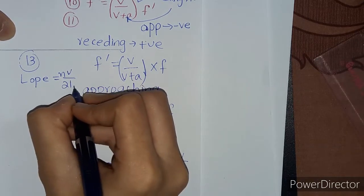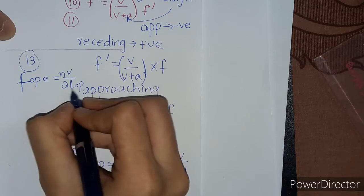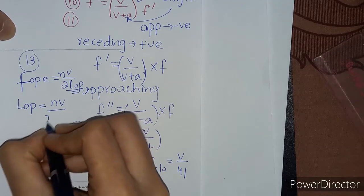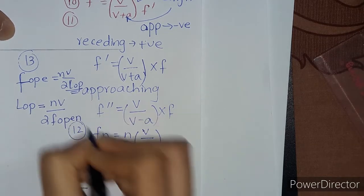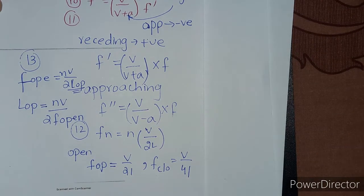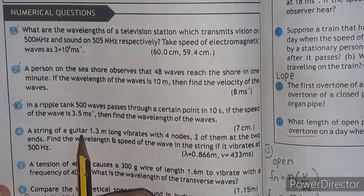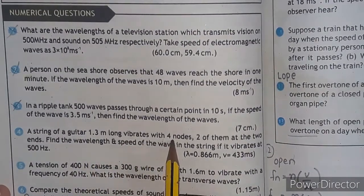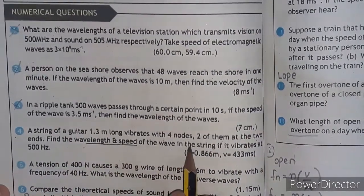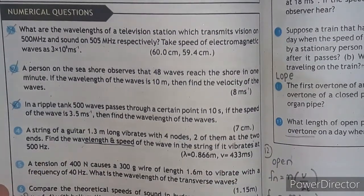For the last numerical, number thirteen, we use f_open equal to nv divided by 2L, and rearranging gives L_open equal to nv divided by 2f_open. These are the formulas used in chapter eight, Waves. Moving towards the exercise problems: problem number four — a guitar string 1.3 meters long vibrates with four nodes, two at the ends. Find the wavelength and speed of the wave if it vibrates at 500 Hz.